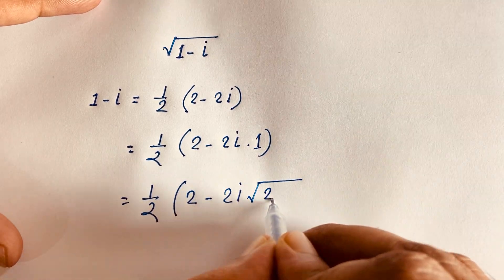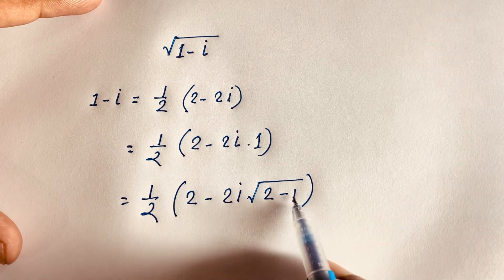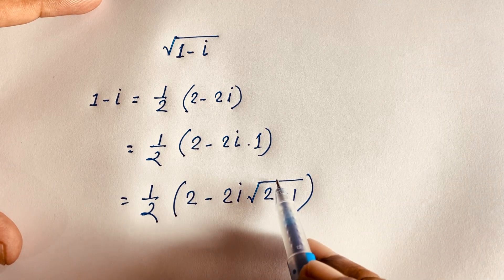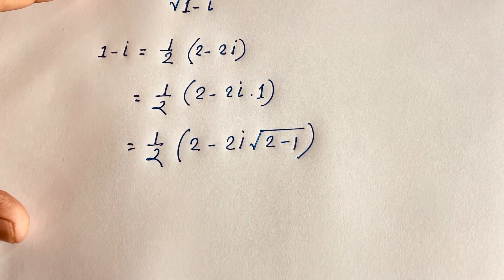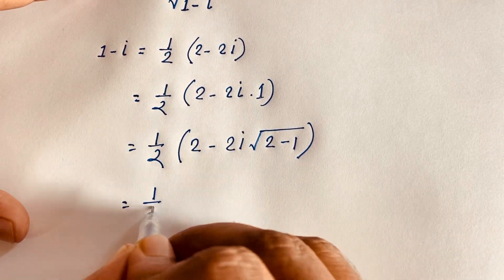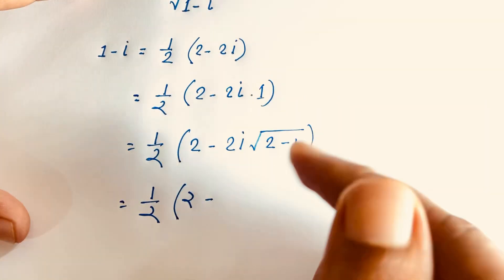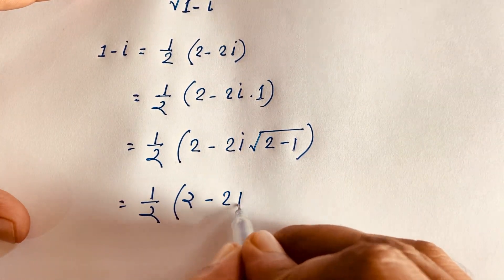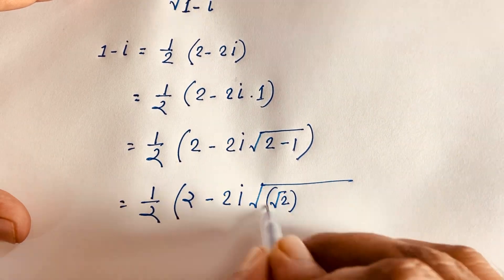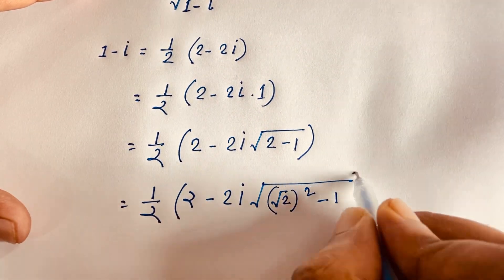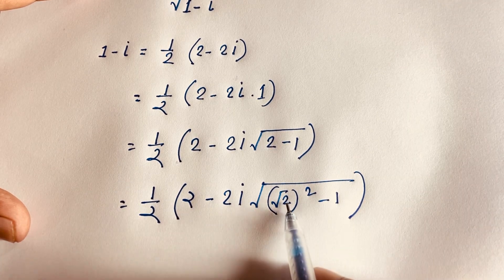Now inside the square root we have (2 minus 2i). Note that 2 minus 1 equals 1, and square root of 1 is 1. So this equation becomes 1 over 2 times (2 minus 2i), and square root of (√2)² minus 1.